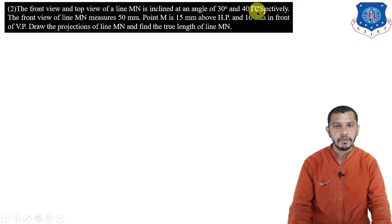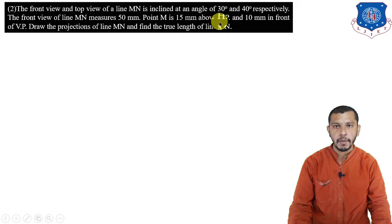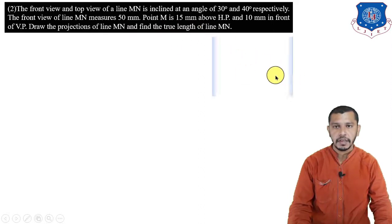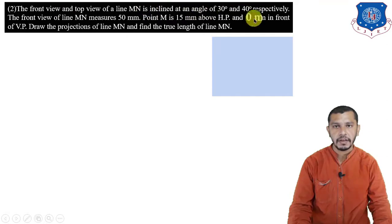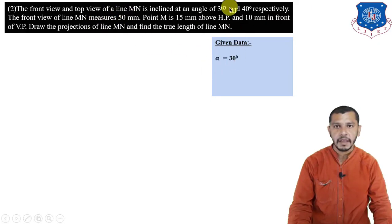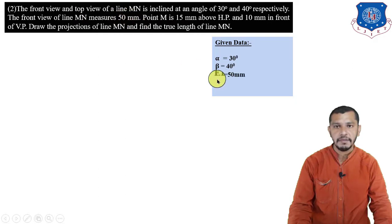Problem 2: The front view and top view of line MN are inclined at 30 degrees and 40 degrees respectively. The front view of line MN measures 50mm. Point M is 15mm above HP and 10mm in front of VP. Draw the projection of line MN and find the true length. The given data: alpha = 30°, beta = 40°, elevation length = 50mm, M is 15mm above HP and 10mm in front of VP.